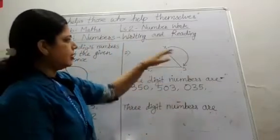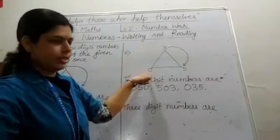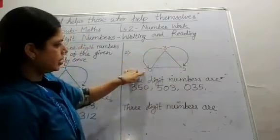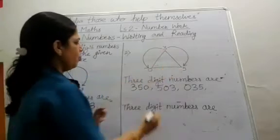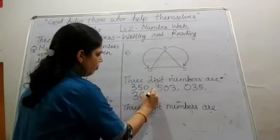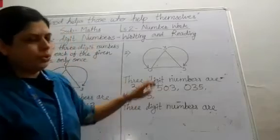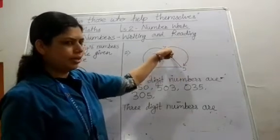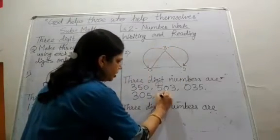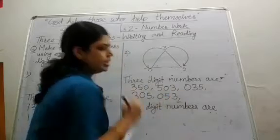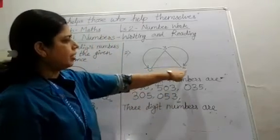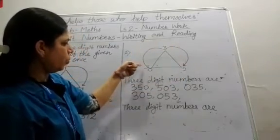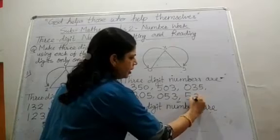Now moving in an anticlockwise direction. The first number starting from 3 is 3, 0, 5 — that is 305. Second number starting from 0: we get 0, 5, 3. And the third number starts from 5: we get 5, 3, 0 — that is 530.